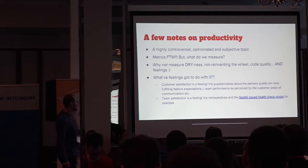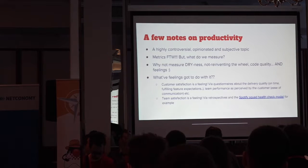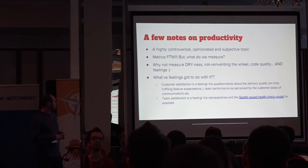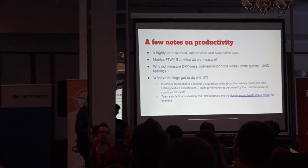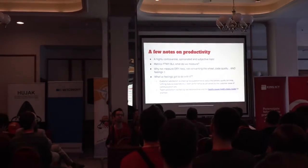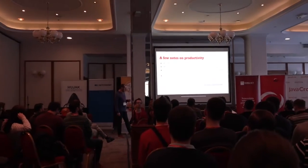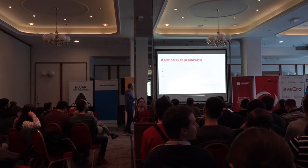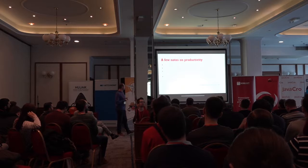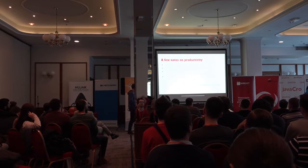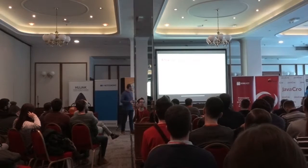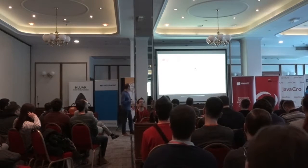But how can we know that the customer is satisfied? We can use questionnaires about delivery quality — is it on time, is it fulfilling feature expectations, are there any bugs present? Or we can see how the customer perceives team performance. Maybe JHipster can also help, especially in terms of DRYness, not reinventing the wheel, and code quality. But before we dig deeper, let's go one-on-one on JHipster.